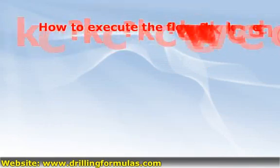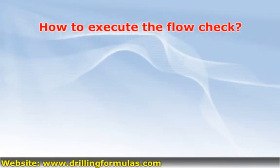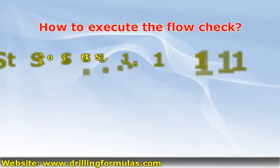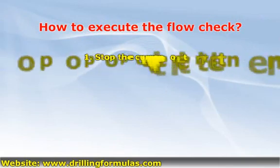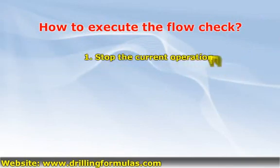How to execute the flow check? First, stop the current operation — such as stop drilling, circulating, tripping pipe, etc.